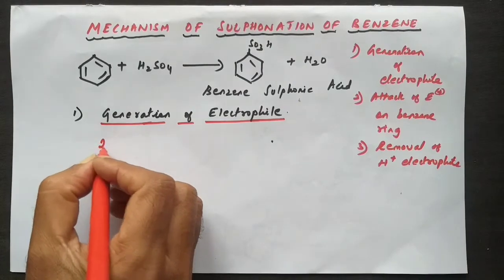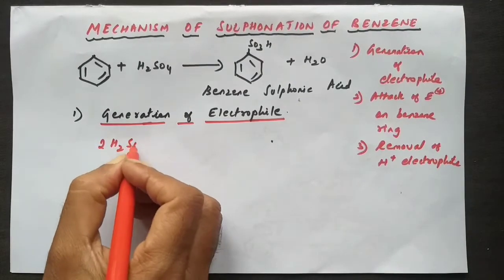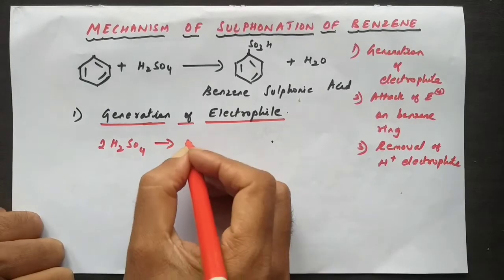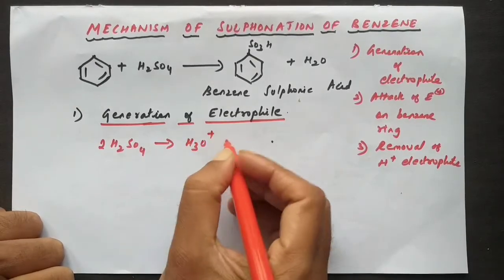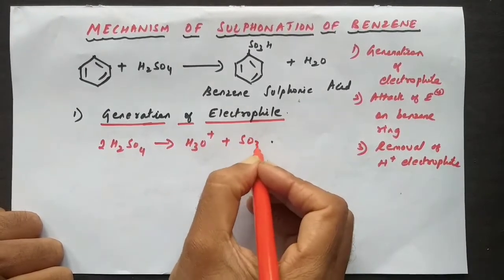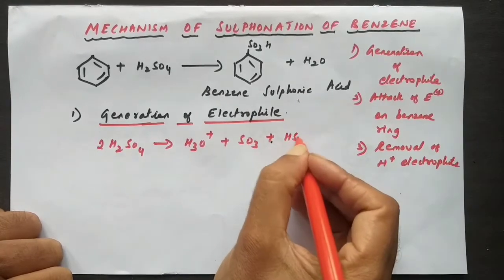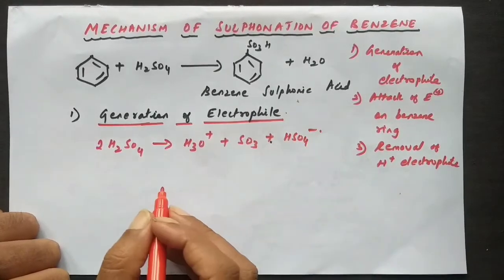Here what happens is the sulfuric acid, two molecules of sulfuric acid, will give H3O+ hydronium ion plus the sulfur trioxide SO3 and HSO4-.